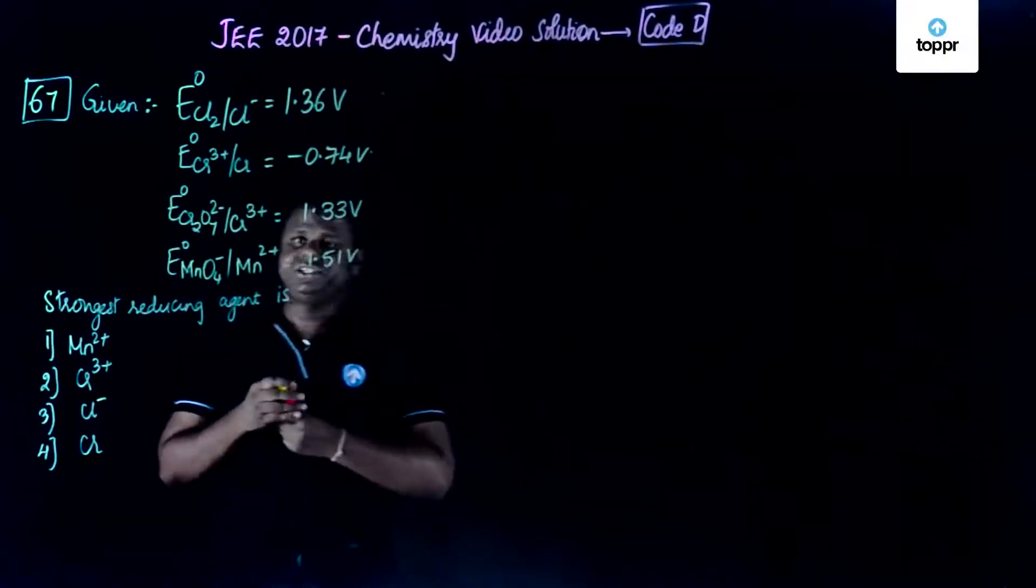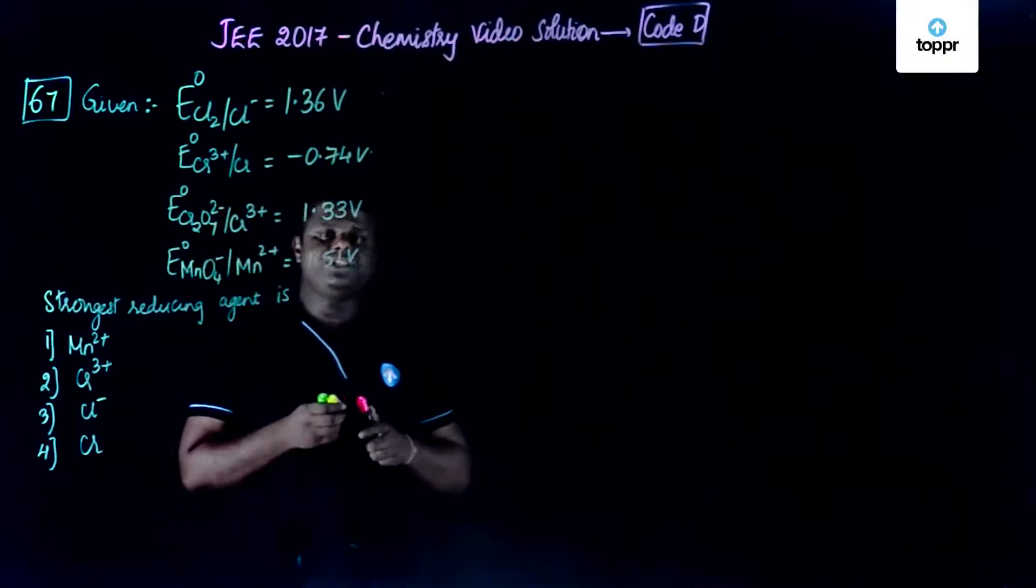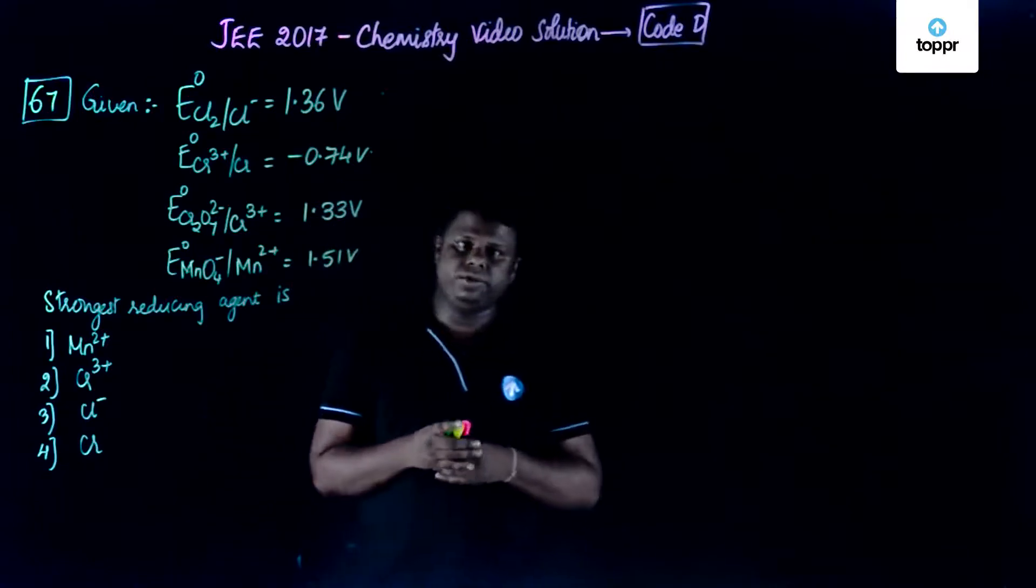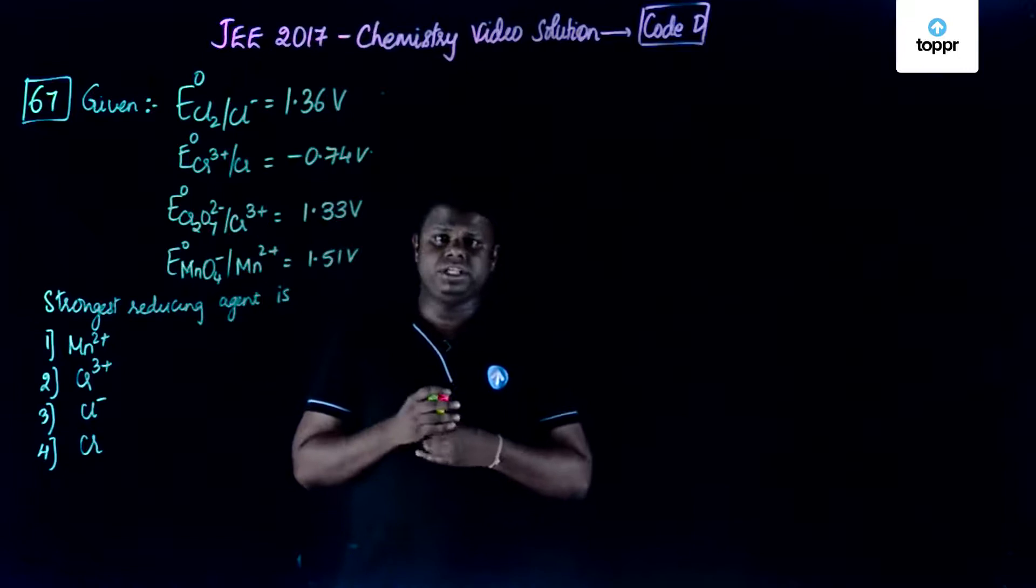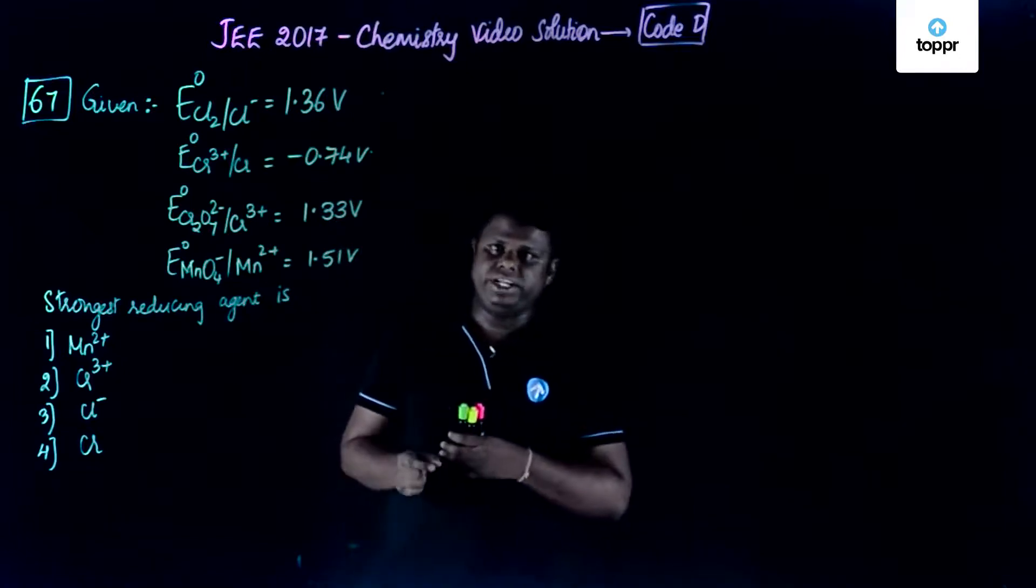Now, let's move on to question number 67. This is a question which is related to electrochemistry and electrochemical cells, and if you could see, this question is distinctly from the section on electrode potential.